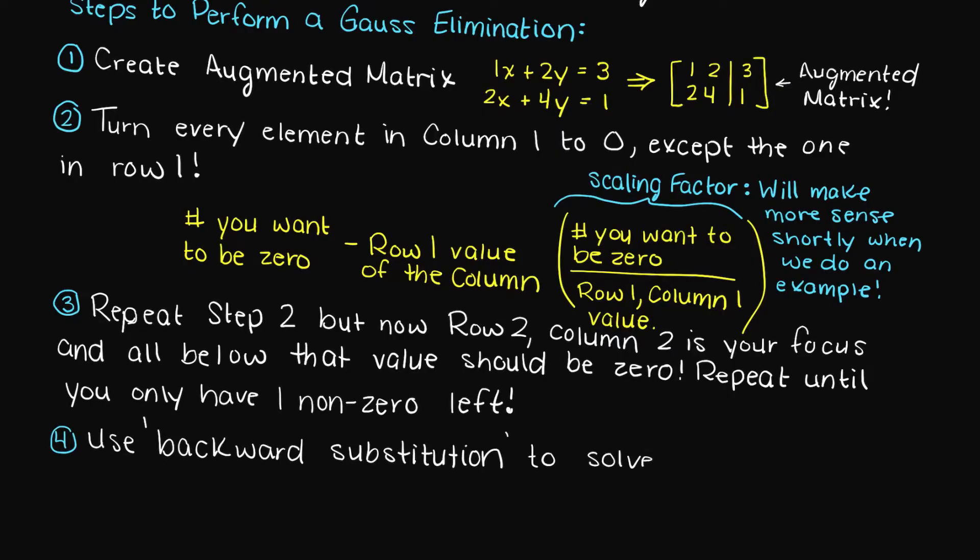Lastly, in step 4 we use backward substitution to solve for all of our unknowns. And that is it, that is Gauss elimination.